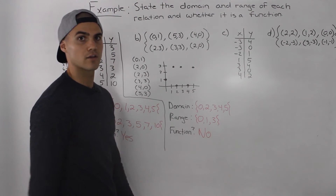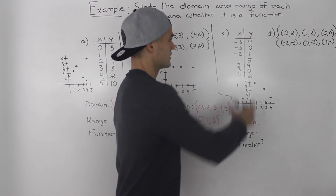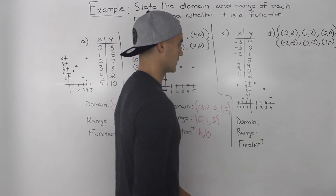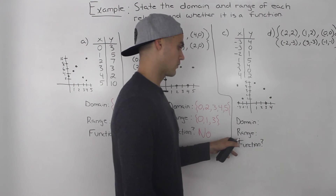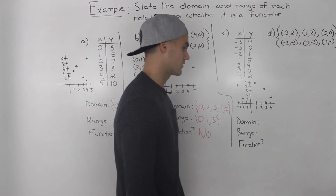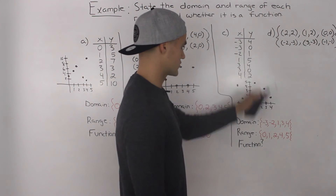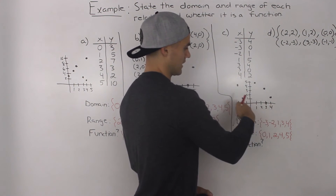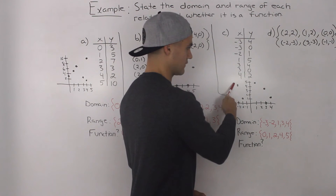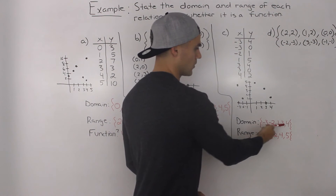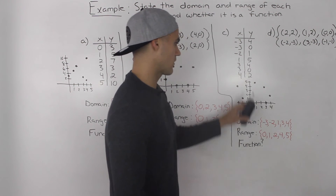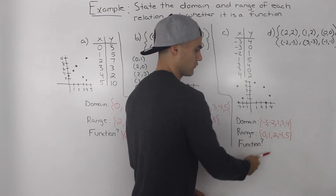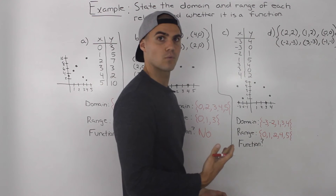Moving on to Part C, I took the table of values and plotted the points. We can now figure out the domain, range, and whether this relation is a function. The domain is: negative 3, negative 2, 1, 3, and 4 — I listed all x values, and any that repeated, like the two negative 3s and the two 3s, I only wrote once. For the range, the y values are 0, 1, 2, 4, and 5 from lowest to highest.